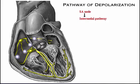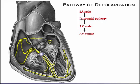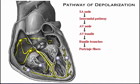The SA node initiates the depolarization impulse which, in turn, generates an action potential that spreads throughout the atria to the AV node. Here, the impulse is delayed briefly before continuing on to the ventricles through the AV bundle, bundle branches, and Purkinje fibers.